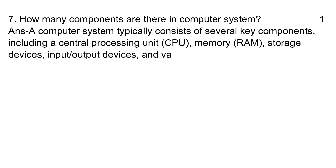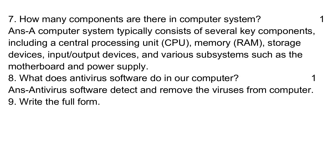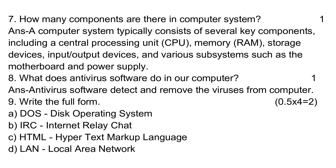Seven: How many components are there in a computer system? Answer: A computer system typically consists of several key components including a Central Processing Unit (CPU), memory (RAM), storage devices, input/output devices, and various subsystems such as the motherboard and power supply. Eight: What does antivirus software do? Answer: Antivirus software detects and removes viruses from a computer. Nine: Write the full forms — A: DOS: Disk Operating System; B: IRC: Internet Relay Chat; C: HTML: Hypertext Markup Language.